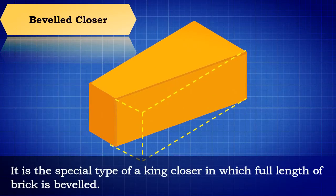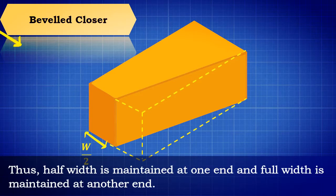Beveled Closer: It is a special type of King Closer in which full length of brick is beveled. Thus, half-width is maintained at one end and full-width is maintained at another end.